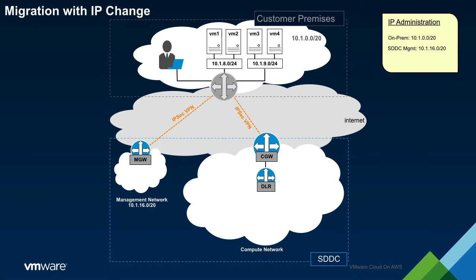The next scenario involves migrating active workloads from the on-prem network to the SDDC. In this example, we will assume that only a portion of the workloads will be migrating from the on-prem environment to the SDDC. We will also assume the constraint that IP addresses are not portable to the SDDC. Therefore, the IP addresses of the workloads must be changed as part of the migration process.